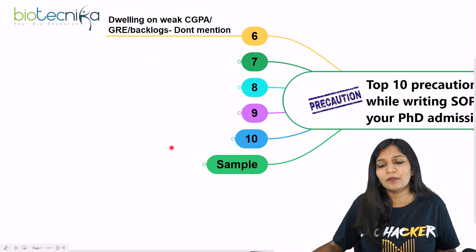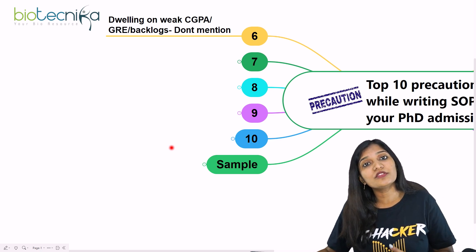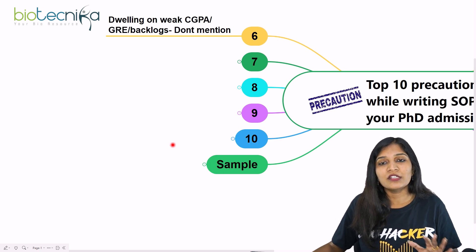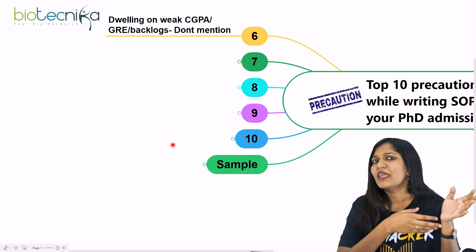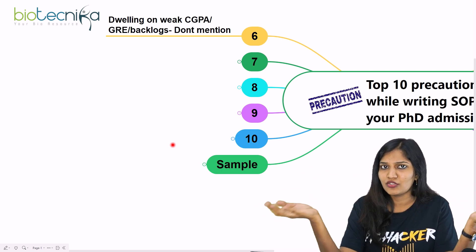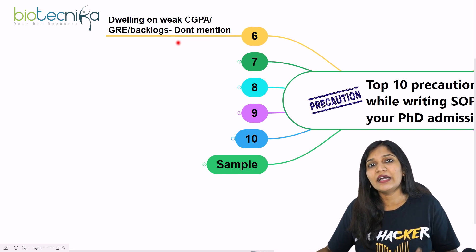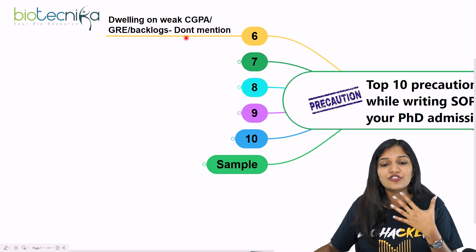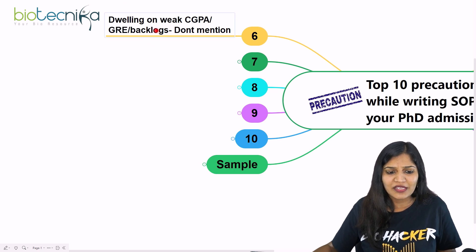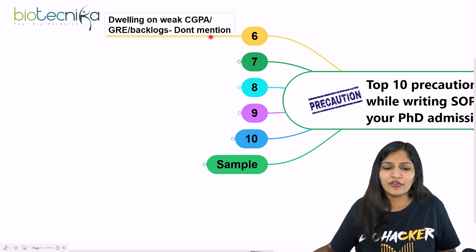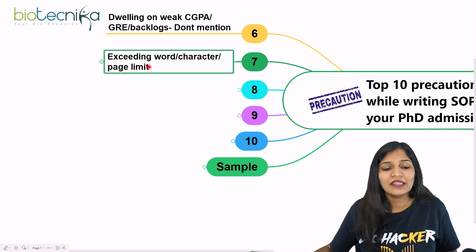The sixth point: do not include your CGPA, GRE scores, TOEFL scores, or IELTS scores in your SOP. Never mention them, even if you have backlogs or a weak CGPA. Your resume will already speak to those scores, so you don't need to put them in the SOP. If asked in an interview, you can discuss them — but never dwell on your CGPA, GRE, or backlogs in the SOP.